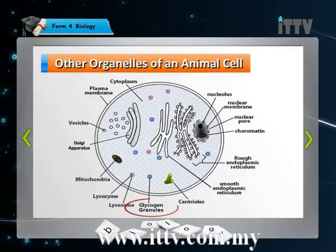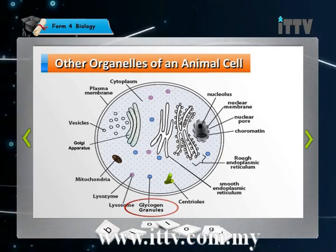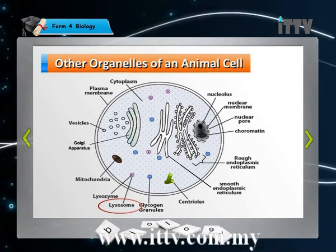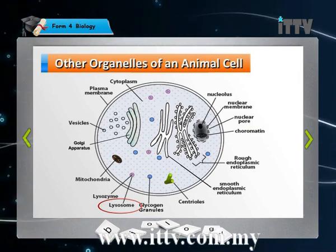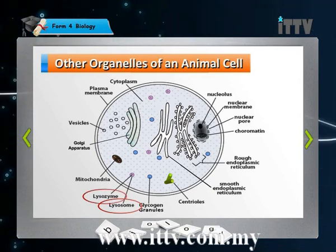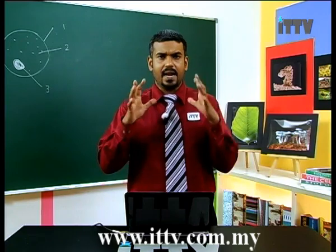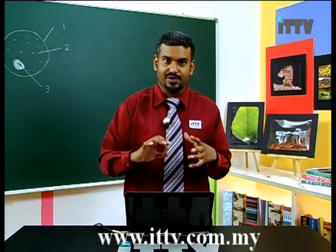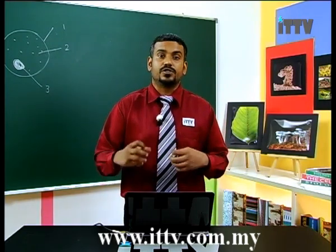You can also see glycogen. What is glycogen? Glycogen is actually food storage in animal cells — it comes from glucose. Then, there is another organelle called the lysosome. Inside the lysosome you can find little drops of lysozymes. The name of the organelle is lysosome, and inside the lysosome there are enzymes that help the cell carry out digestion.